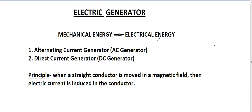A small generator which is used for producing electricity or electric current is called a dynamo. Depending upon the type of current produced by the electric generator, these are of two types. The first one is alternating current generator, in short called AC generator. The second one is direct current generator, called DC generator.